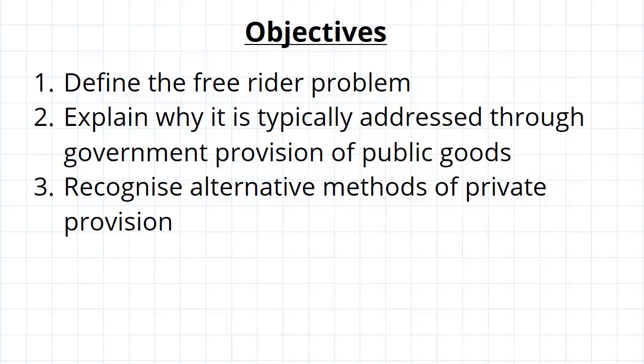In this video we're going to look at how public goods are actually a source of market failure in the form of the free rider problem. We'll define what that is, explain how it's typically addressed through the government providing public goods, but also recognize that there are alternative ways for them to be privately provided.